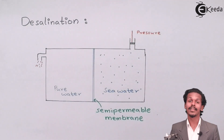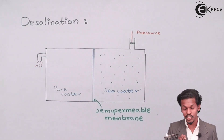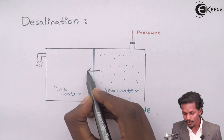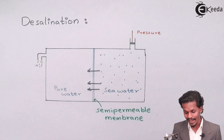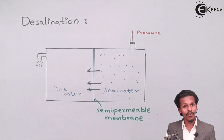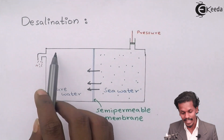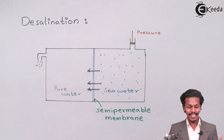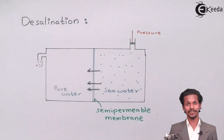By applying this higher pressure, the water present in the sea water will now move towards the pure water side. As a result, the quantity of pure water increases and the water flows out. This is achieved with the help of reverse osmosis.